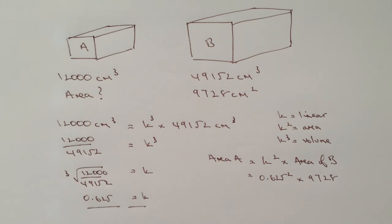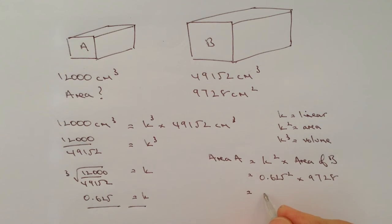That will tell us then again very neatly that the area of shape A is 3,800 centimeters squared, and that will answer the question.